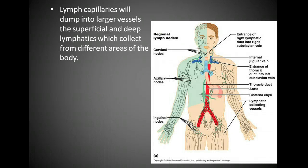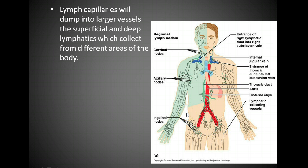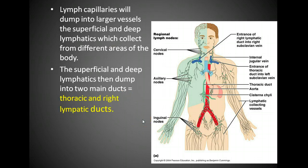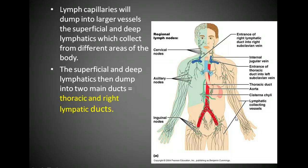Now let's talk about drainage. The lymph capillaries will dump into larger vessels — they unbranch into superficial and deep lymphatic ducts. Lymph forming in the hands goes into capillaries, then dumps into bigger and bigger vessels. The same happens from the legs and other regions of the body. The superficial and deep lymphatics then dump into two main ducts: the thoracic duct and the right lymphatic duct.